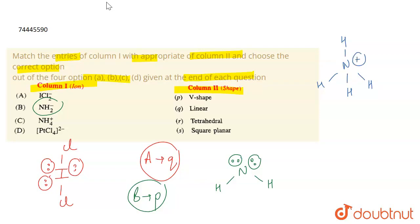So C is matching with R. PCL4 is matching with P. PCL4 is square planar complex and this is 2 minus, which means D is matching with T. The correct match is A with Q.